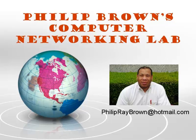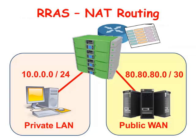Hello and welcome to Phil Brown's Computer Networking Lab. You're watching the instructional video called Routing in Remote Access Using a NAT Router. The goal of this video is to use routing in remote access to create a NAT connection from our private LAN network to the public WAN network. Our private LAN network has a 10.0 IP address, and the public WAN network address given to us by our internet service provider is 80.80.80.2. Let's get to work.